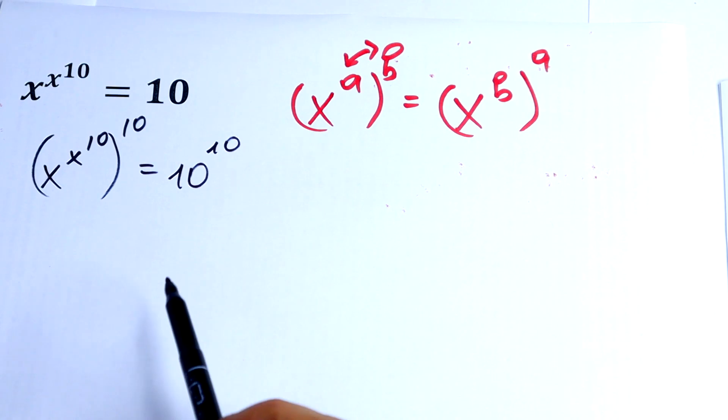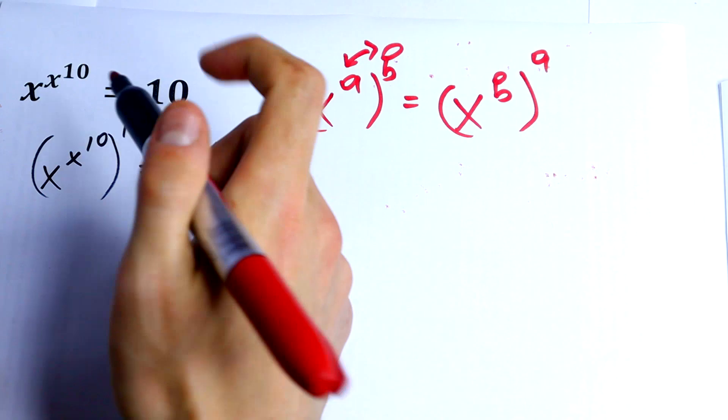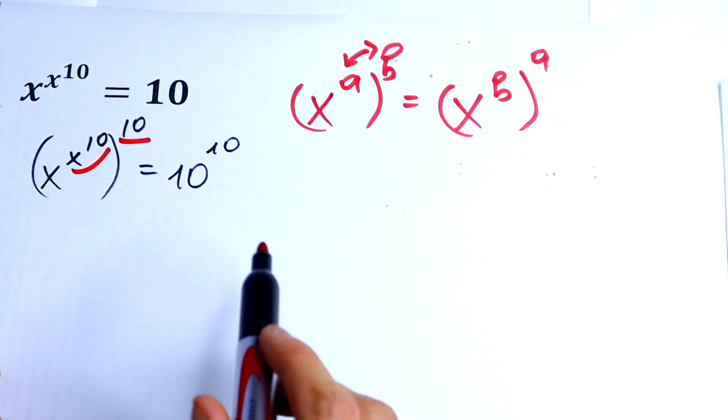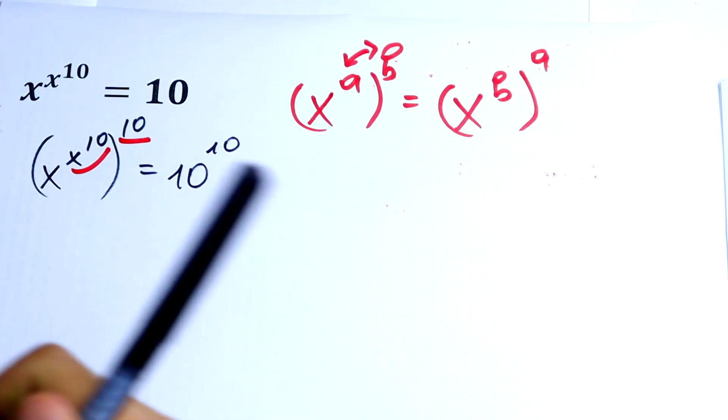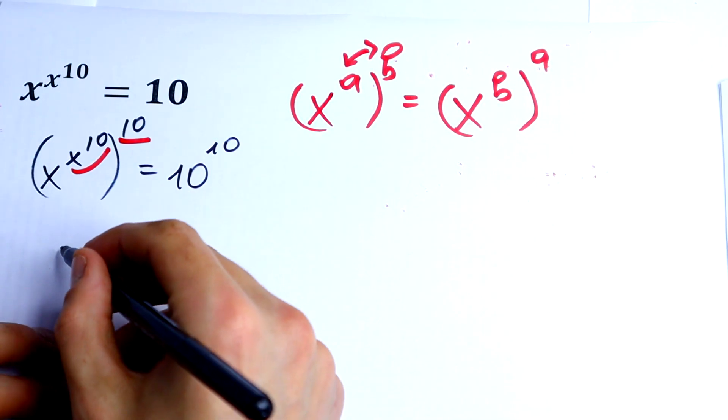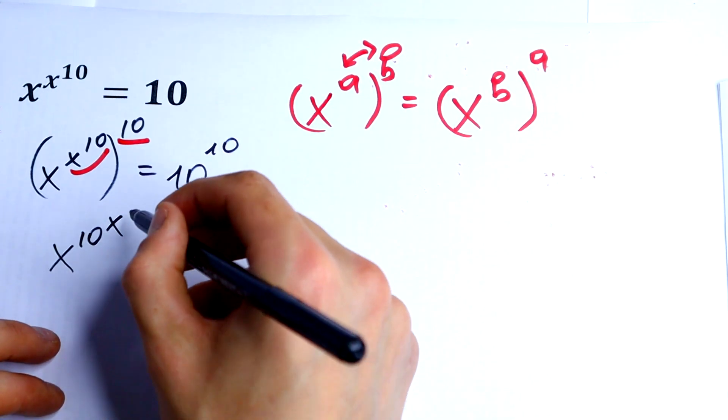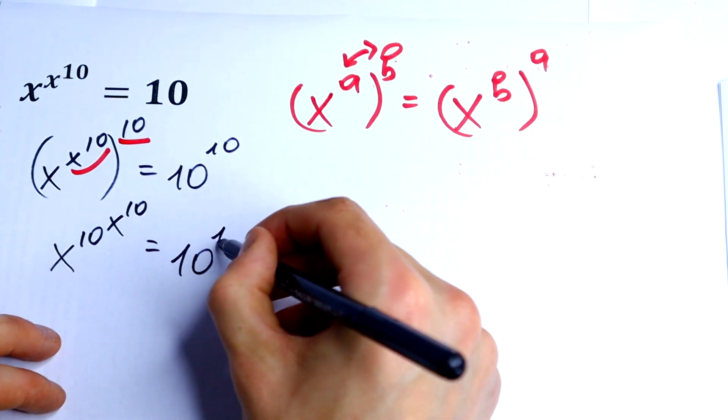Next we use this rule of interchange. So we have this exponent b and this is a. Using this rule we can swap these exponents. So it will be equal to x to the 10th power, all to the power x to the 10th power. It would be equal to 10 to the 10th power.